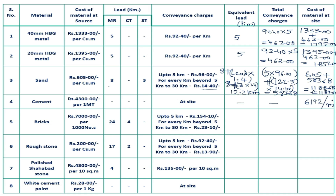The next material is bricks. Bricks cost 7000 rupees per 1000 numbers and the distance is 24 km by metal road plus 4 km by cart track. When conveying materials through a cart track, the lead is increased by 10%, so we apply a factor of 1.1. Equivalent lead is 24 km plus 4 into 1.1 = 28.4 km.